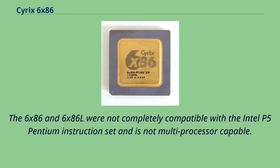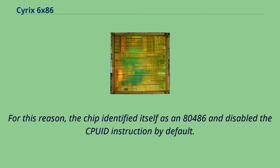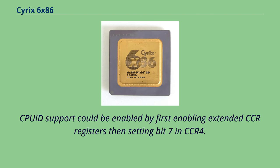The 6x86 and 6x86L were not completely compatible with the Intel P5 Pentium instruction set and are not multiprocessor capable. For this reason, the chip identified itself as an 80486 and disabled the CPUID instruction by default. CPUID support could be enabled by first enabling extended CCR registers, then setting bit 7 in CCR4.